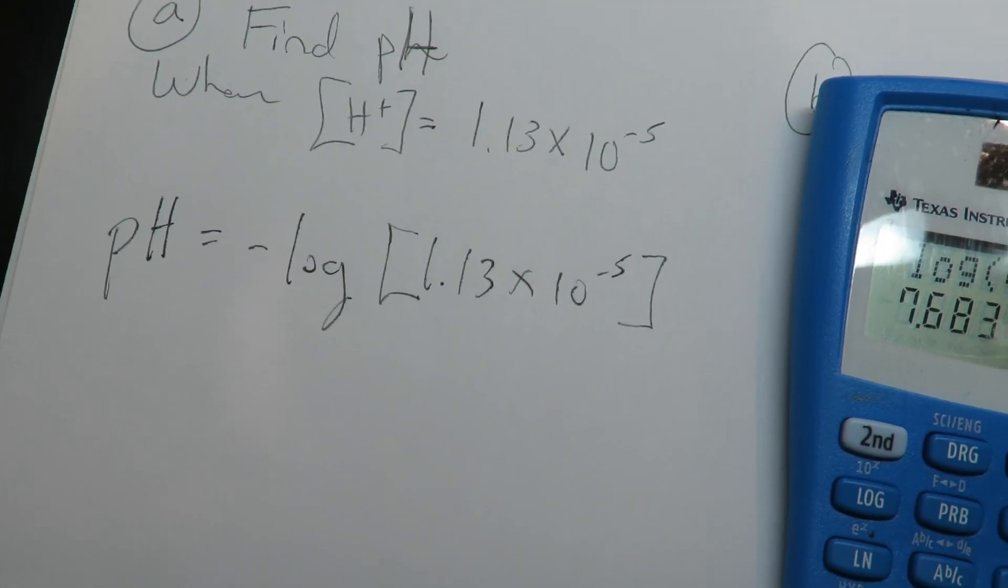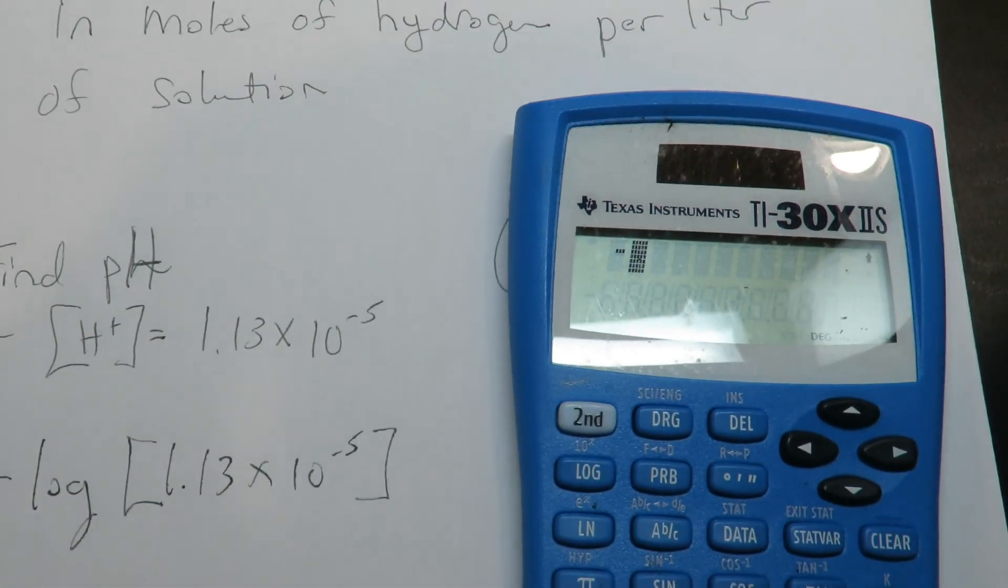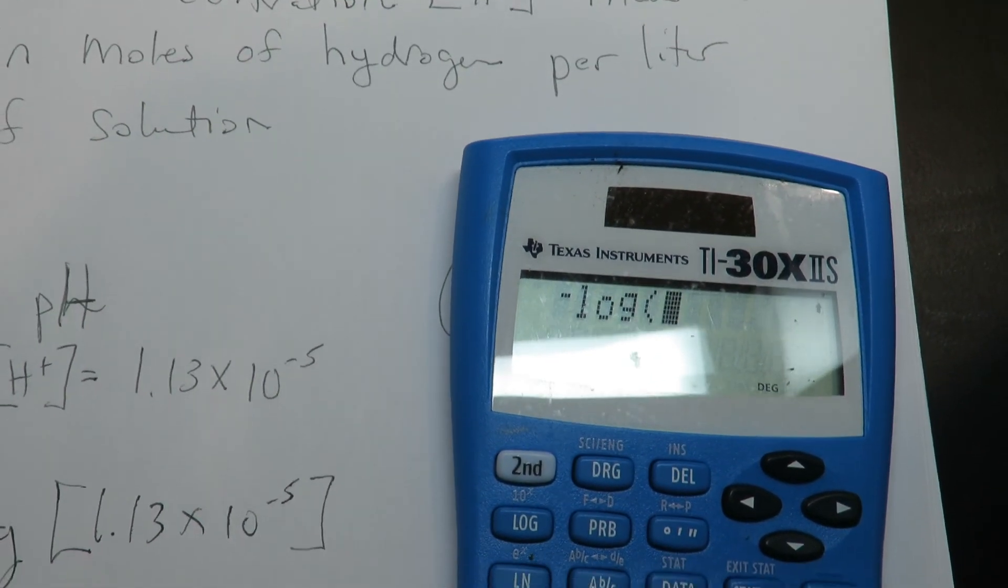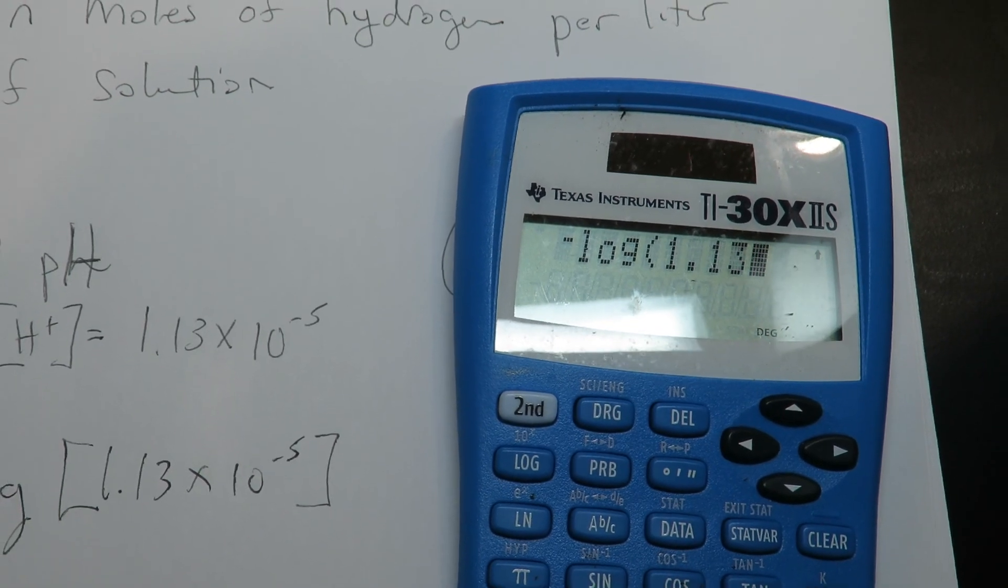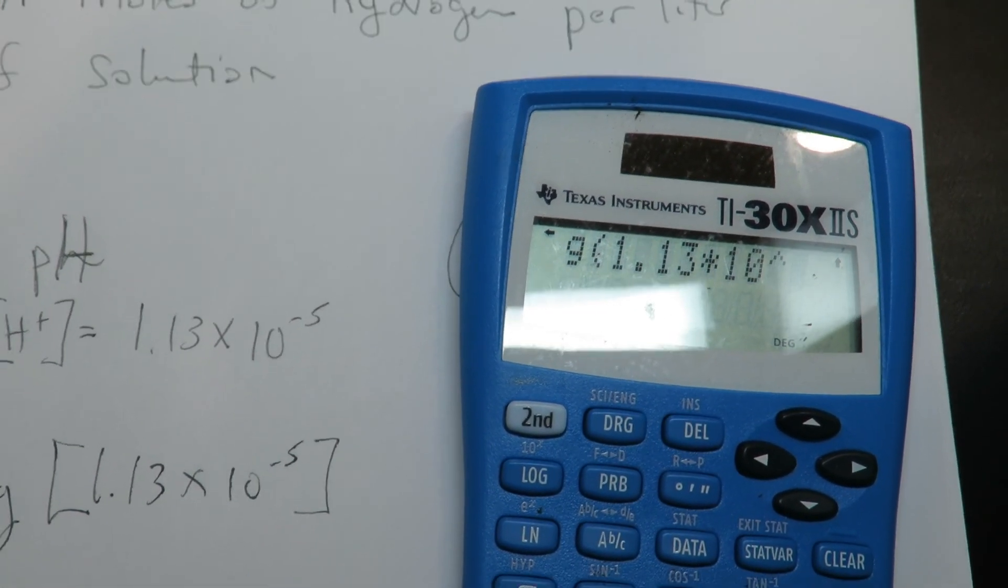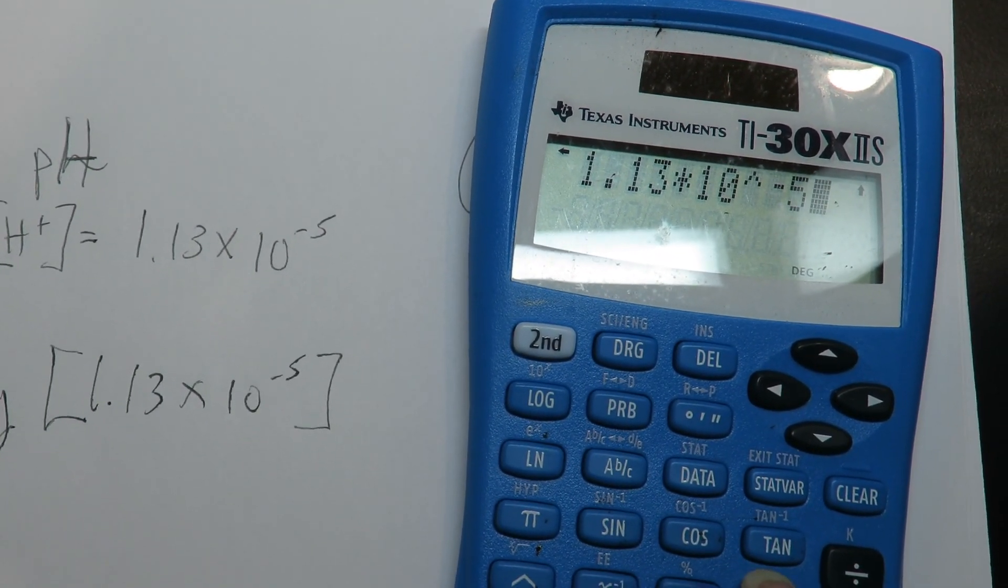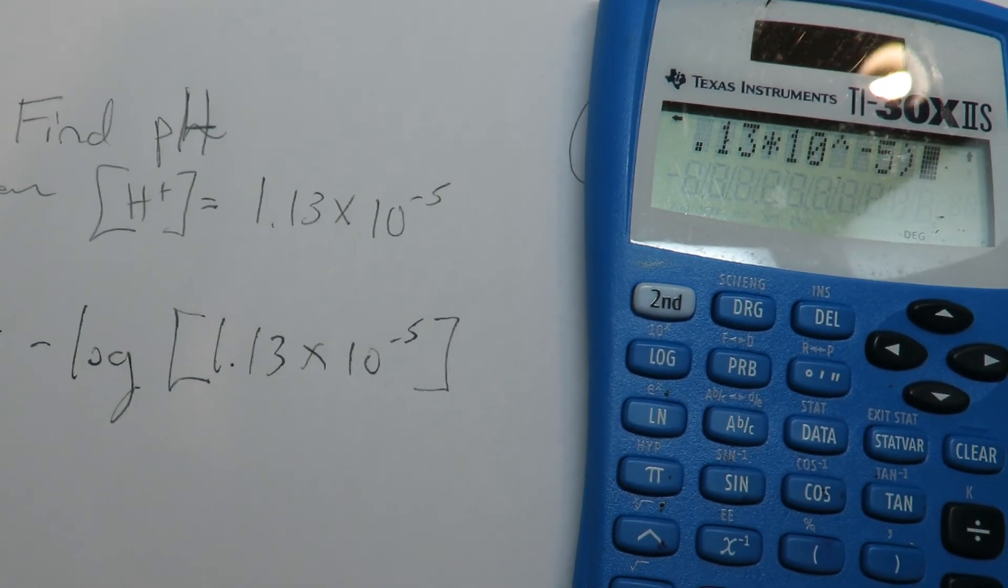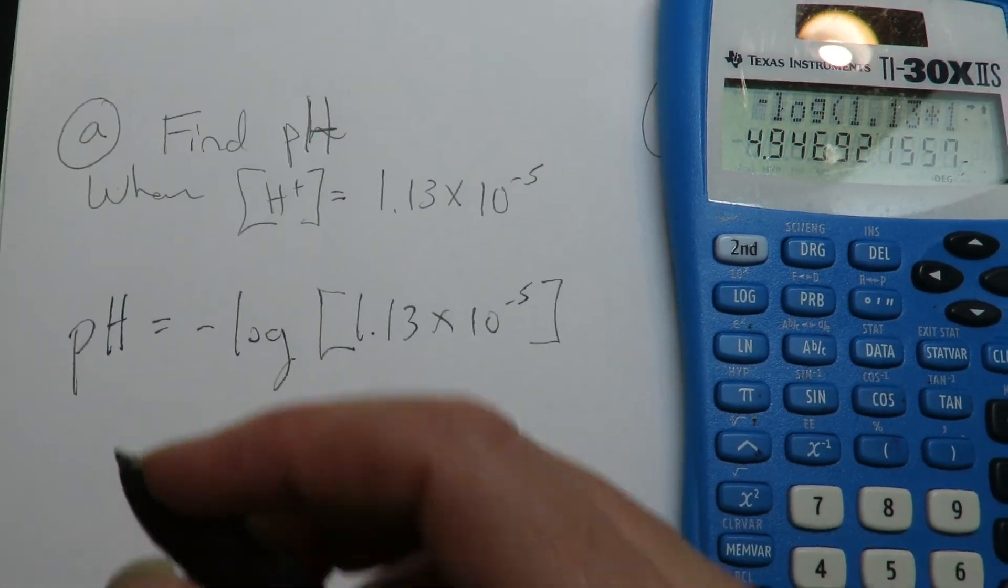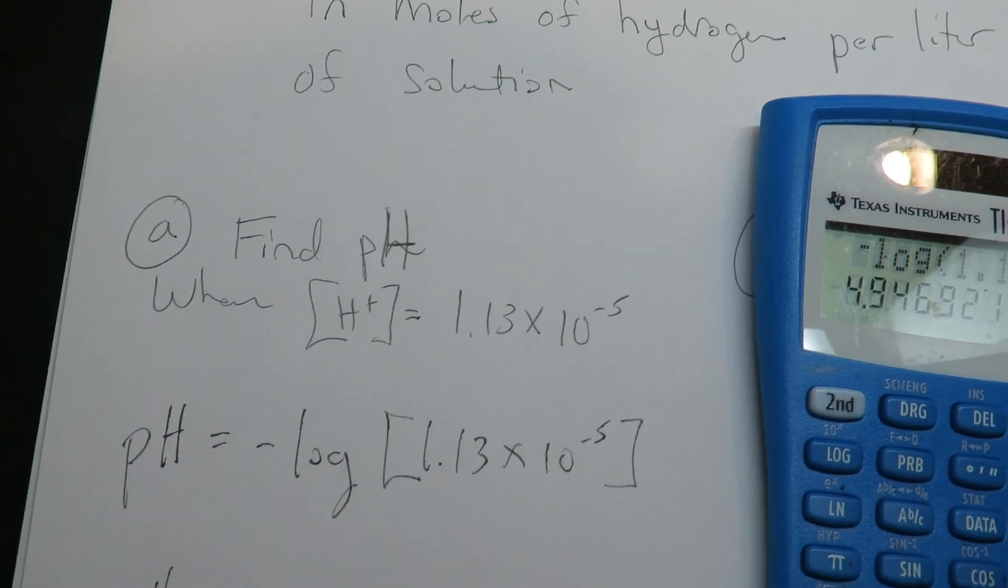This one is just a straight up calculator. So again, make sure you use the negative button. So negative log, that's a base 10, 1.113 times 10 raised to the negative 5. So that's going to be a pH of about 4.9.